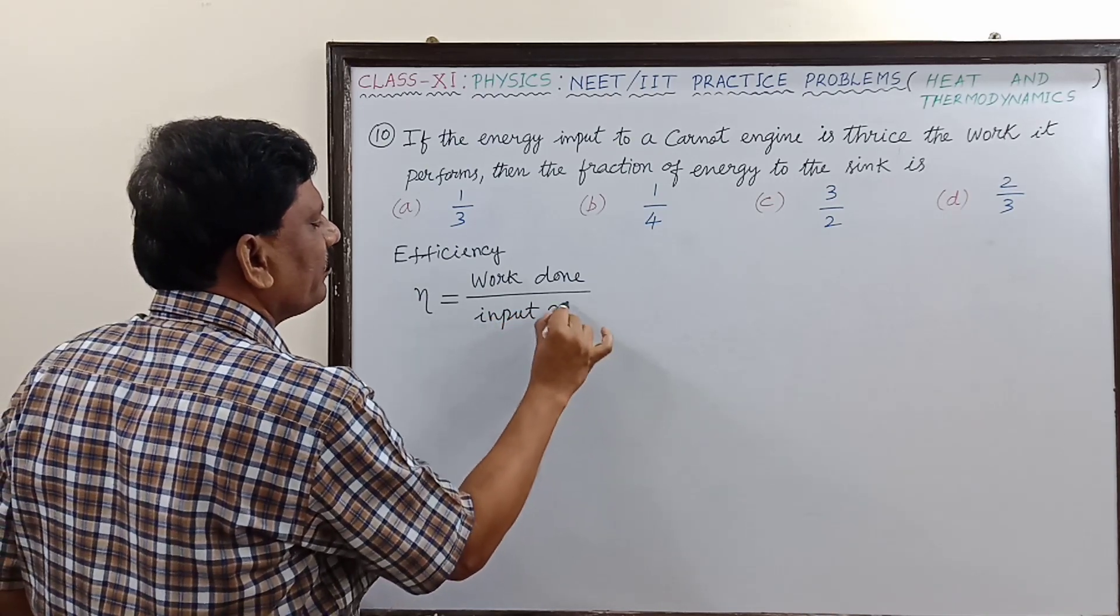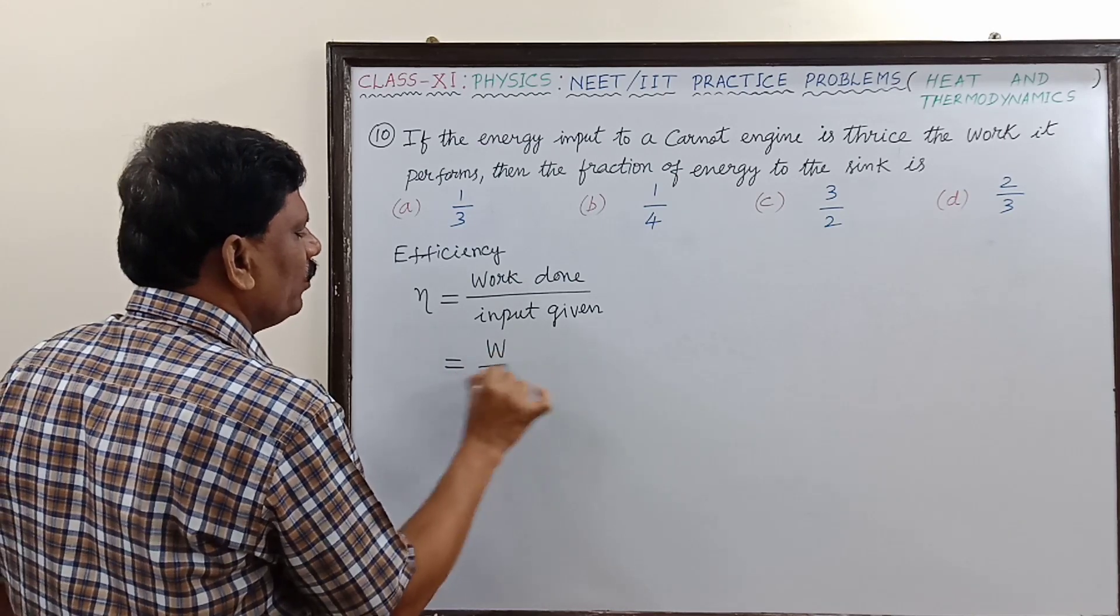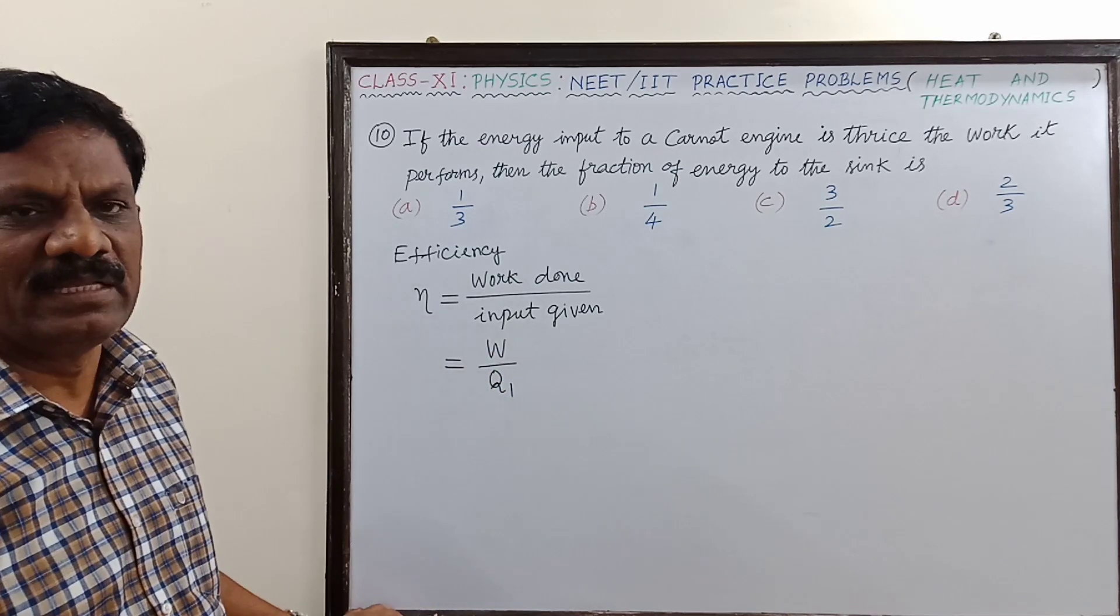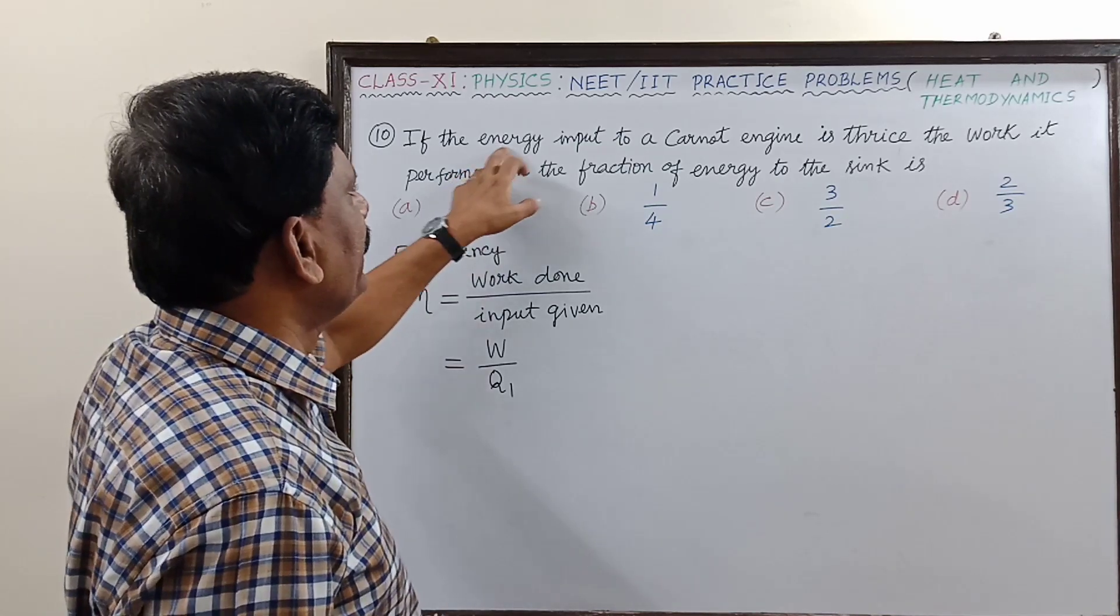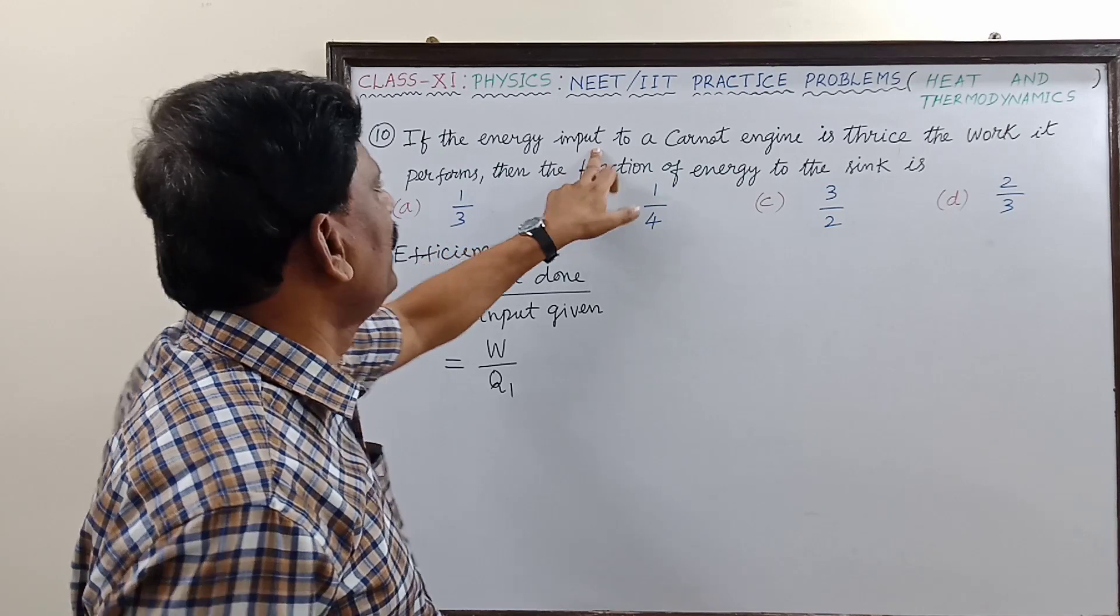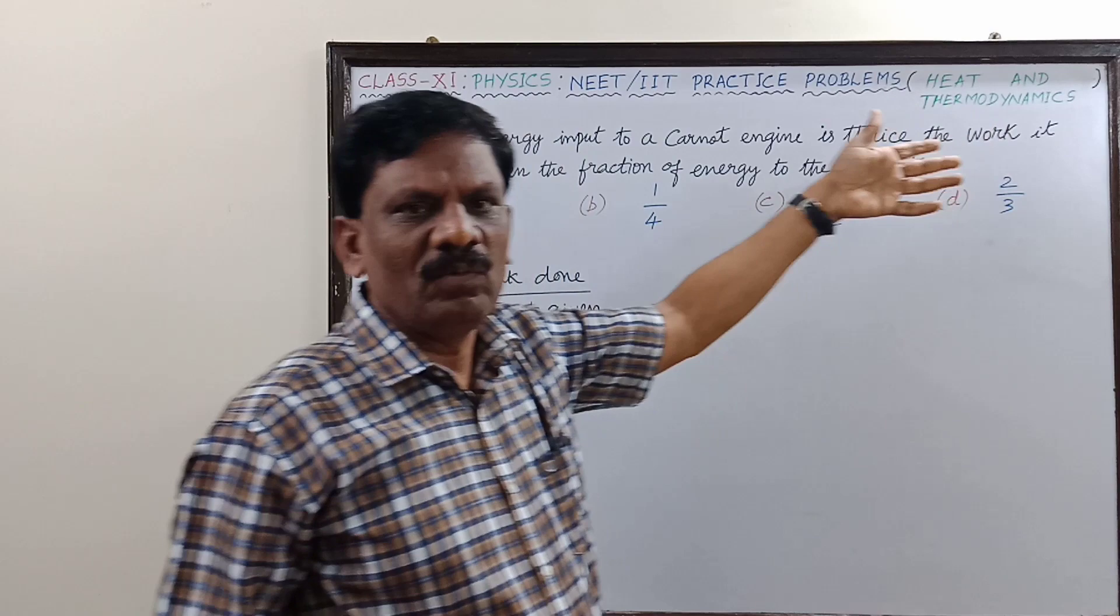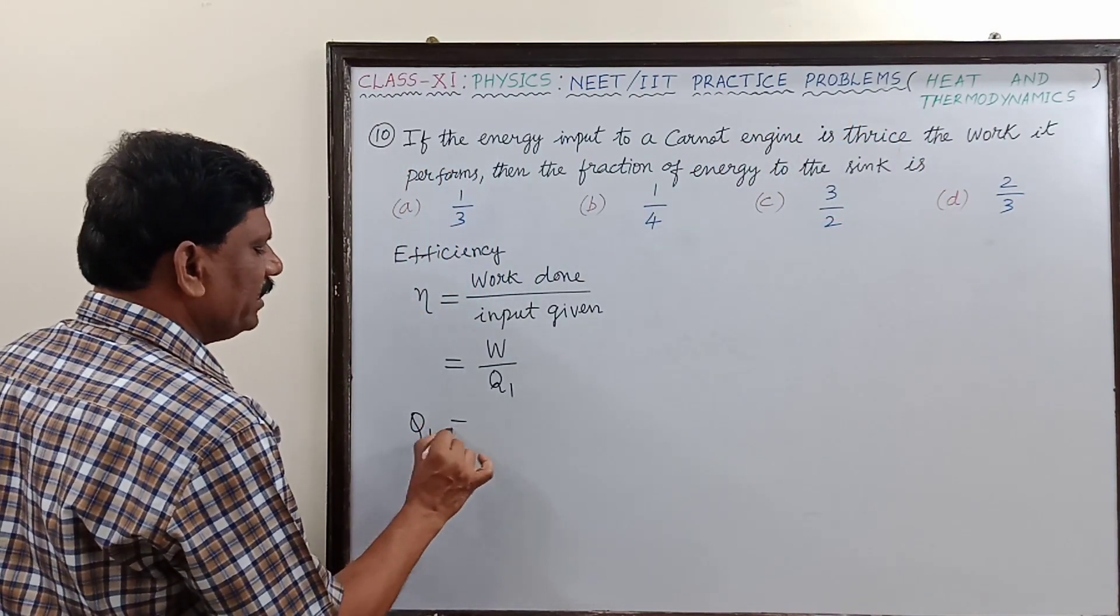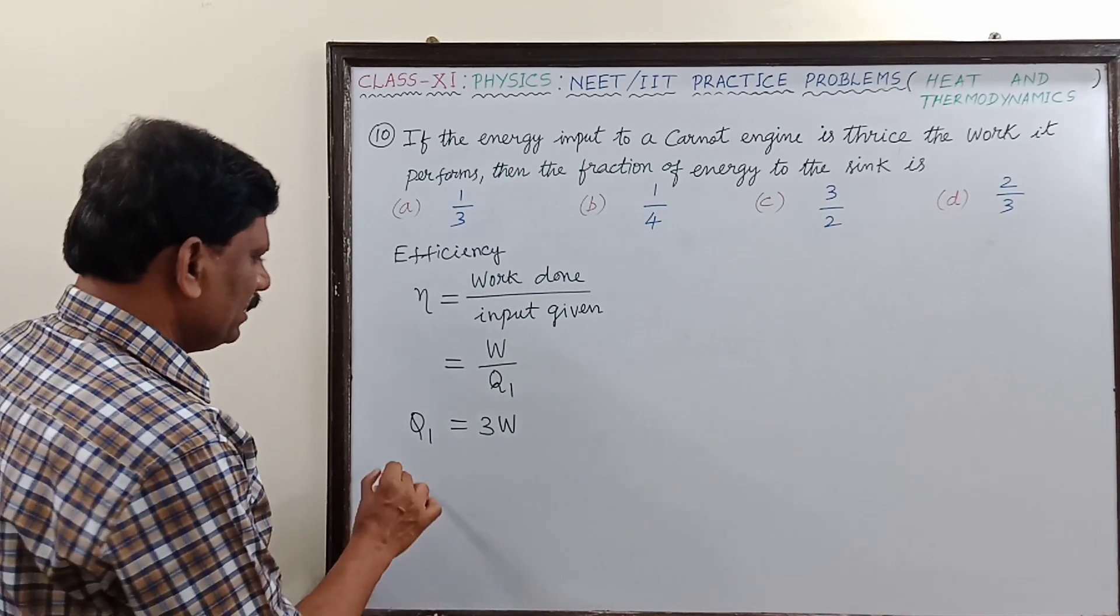So this is equal to W divided by Q1. This is the symbol we have used in the theory class. Here what is given? The energy input to the Carnot engine is thrice the work done, so Q1 is equal to 3 times W.